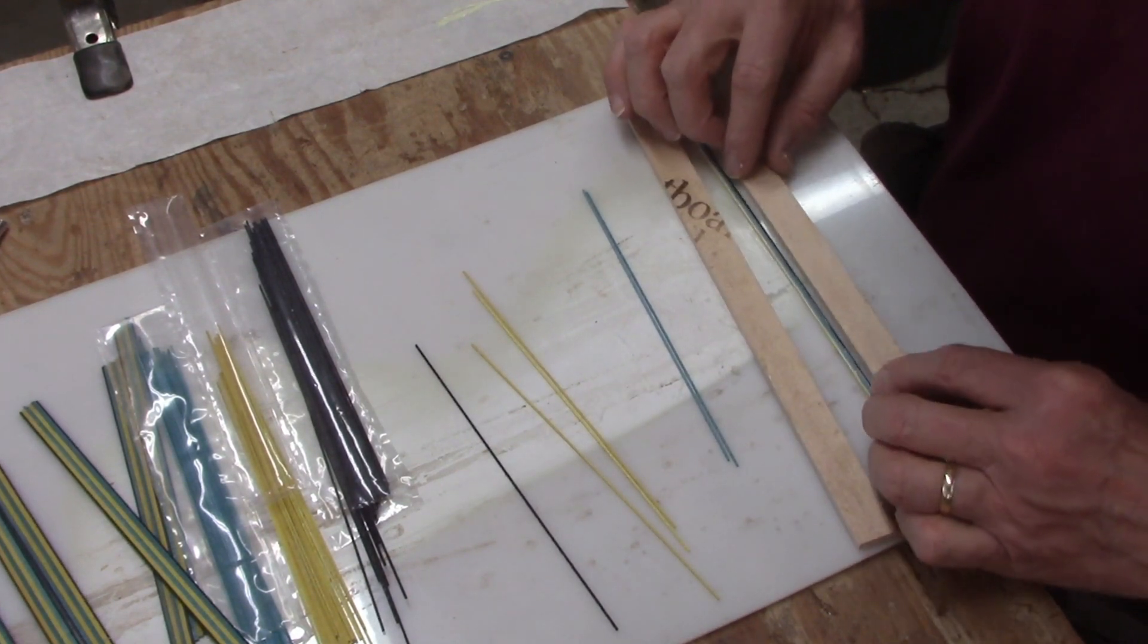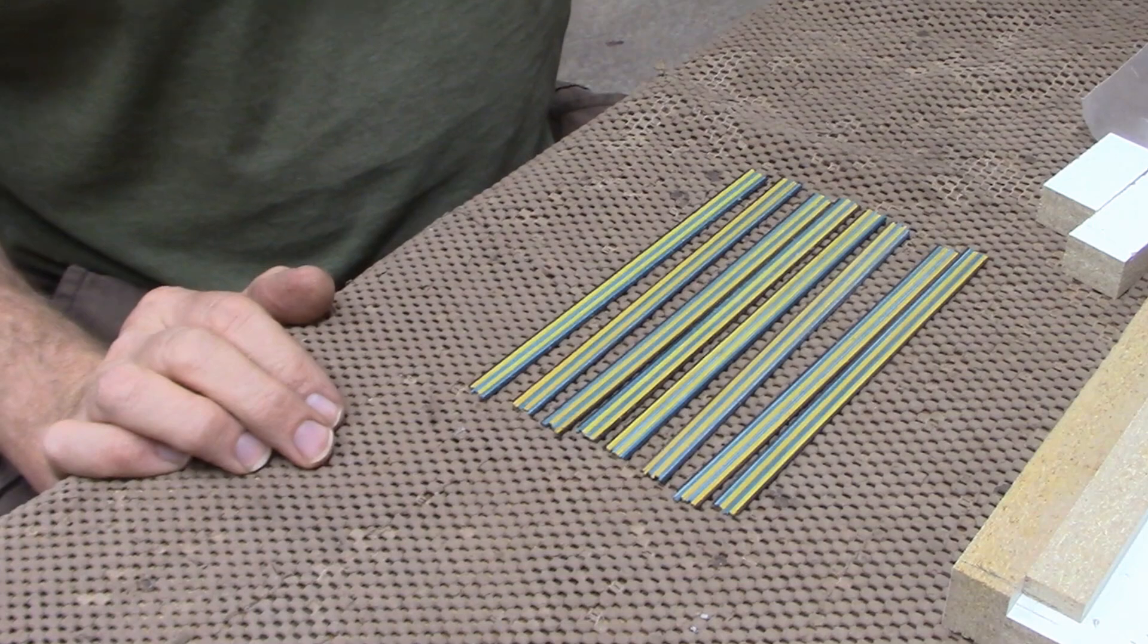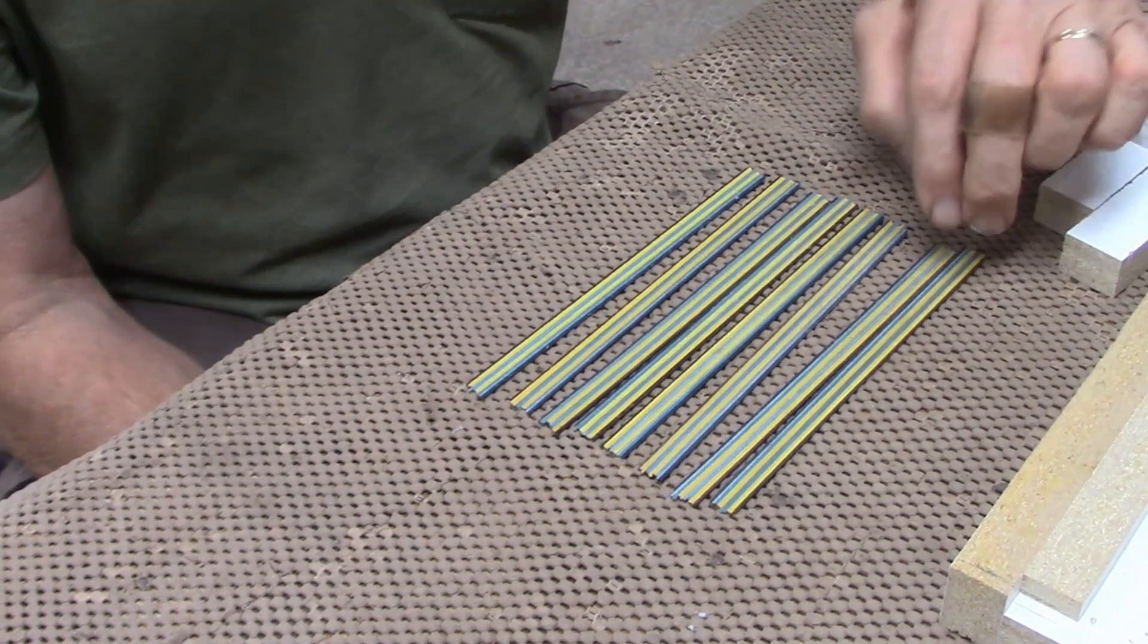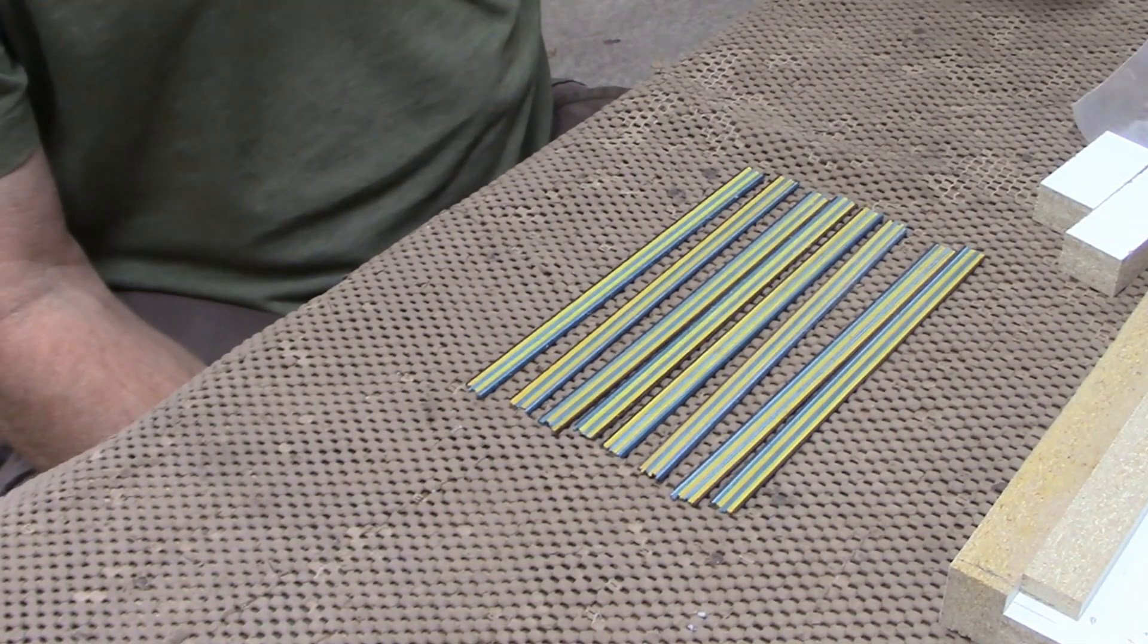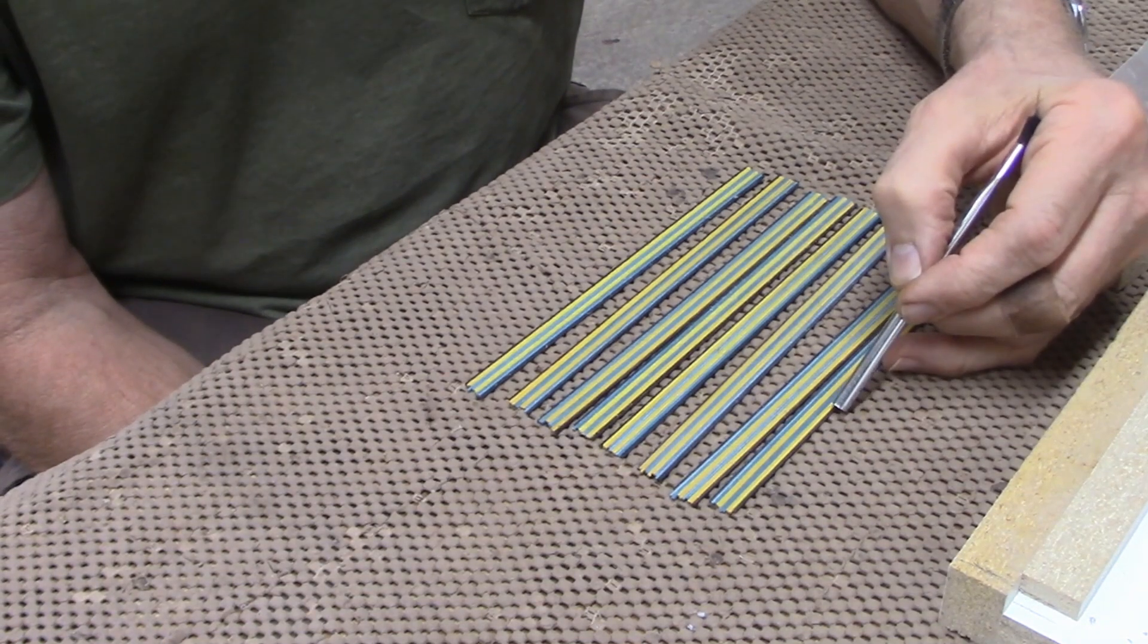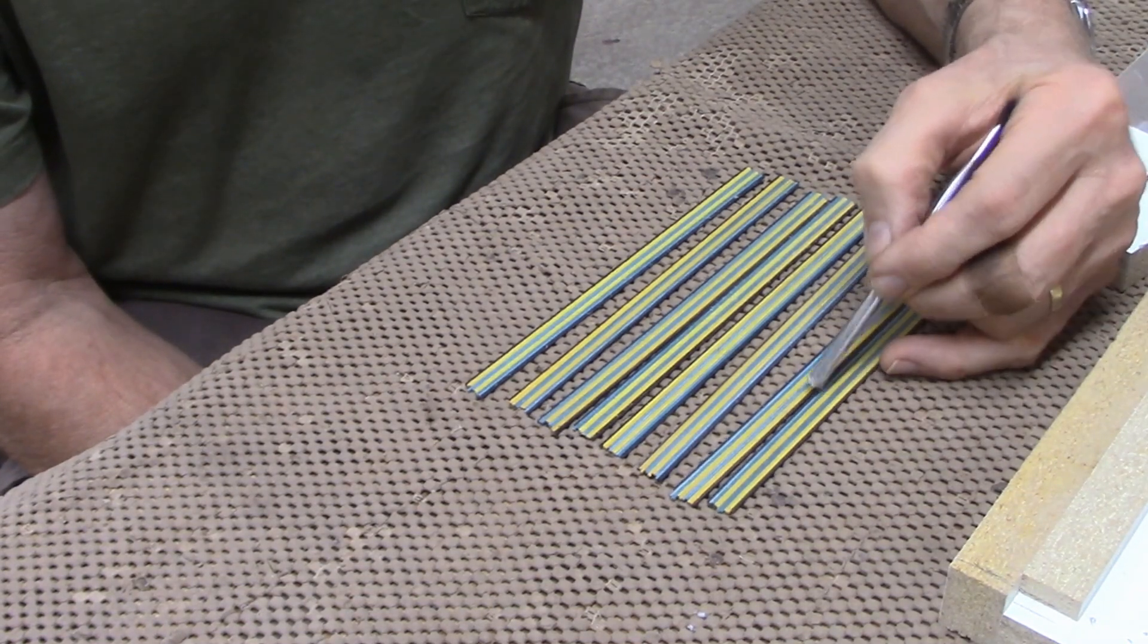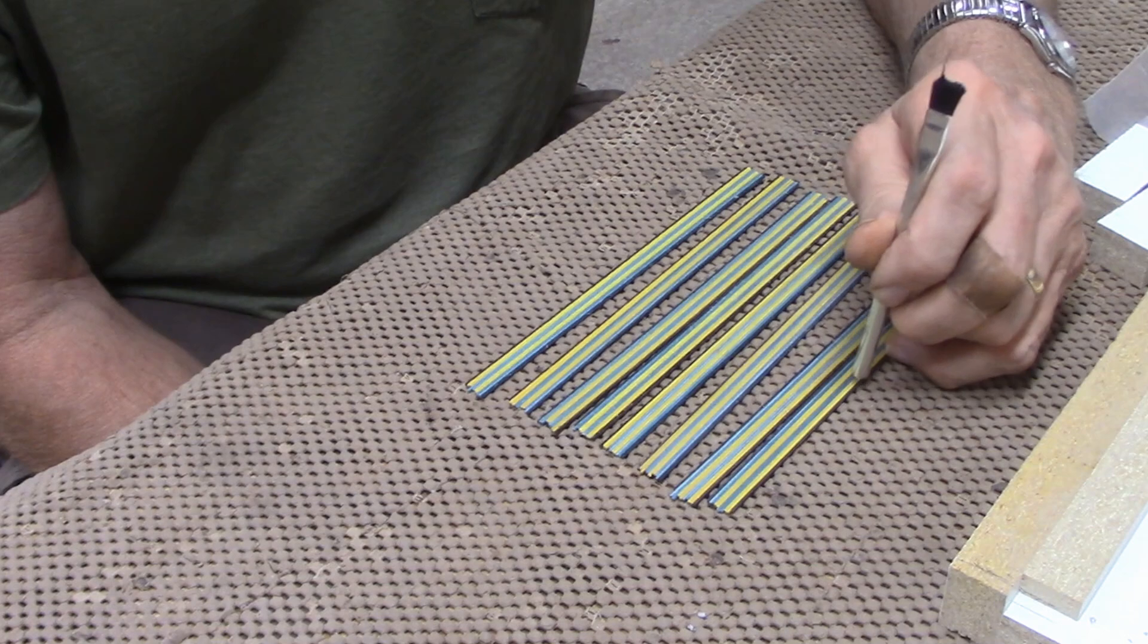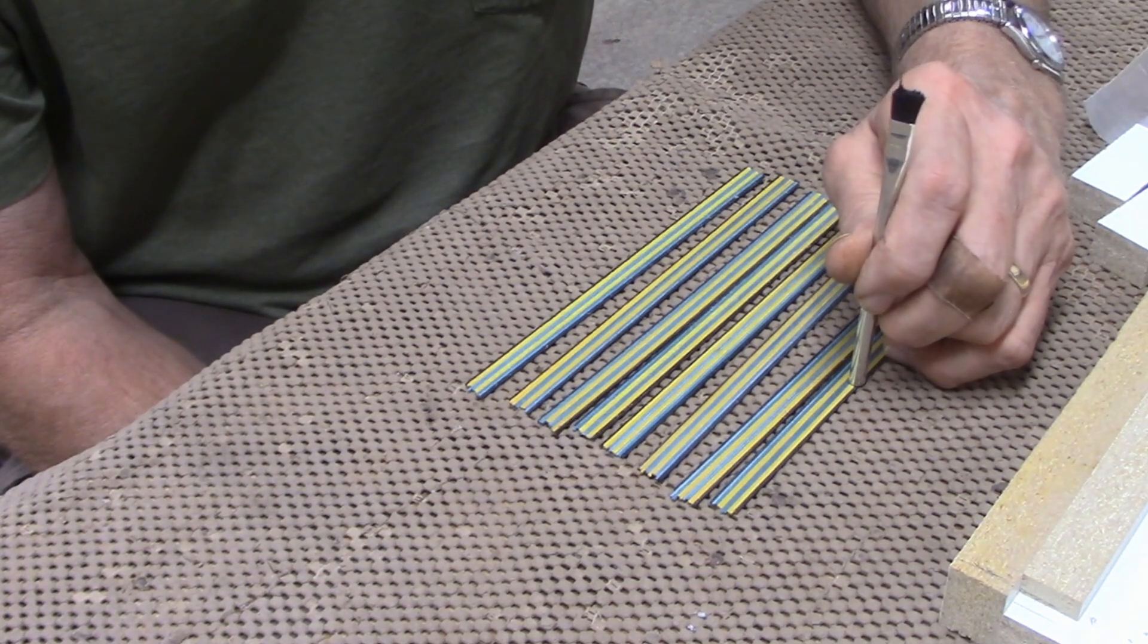I have all the columns glued up. There are eight of them, and what I have is there's a black strip on either edge and then two white sticks.